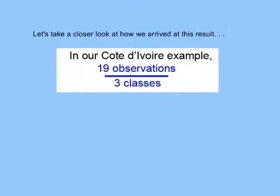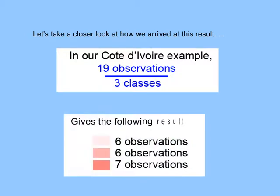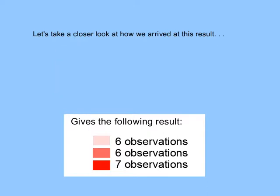Let's take a closer look at how we arrived at this result. In our data from Cote d'Ivoire, we have 19 observations and we want to divide these into three classes. 19 divided by 3 does not go evenly, but we get approximately 6 observations in each of our classes.